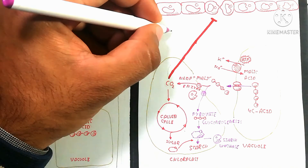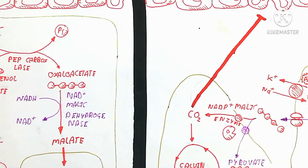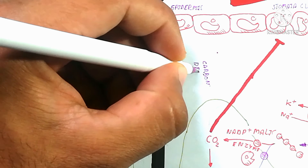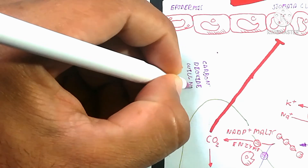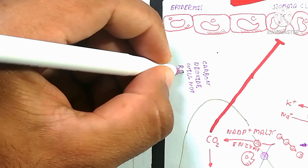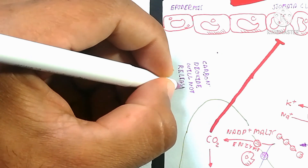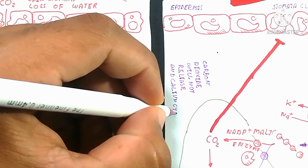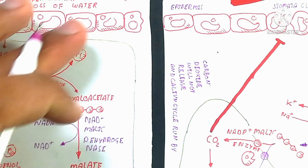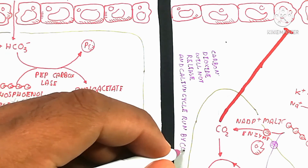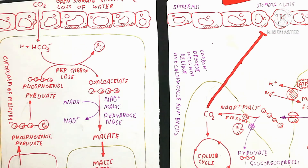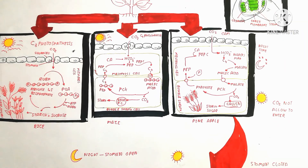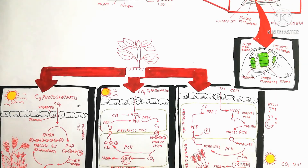In summary: during daytime, starch is produced by the Calvin cycle using CO₂ released from malic acid, while stomata remain closed. During nighttime, malic acid is stored in the vacuole. This prevents the release of carbon dioxide and prevents photorespiration and water loss.